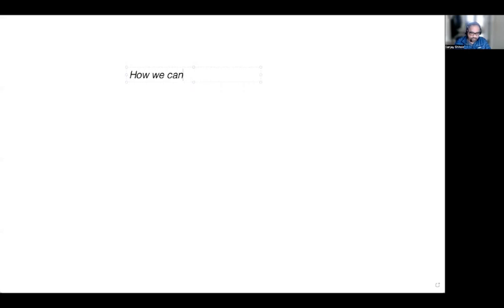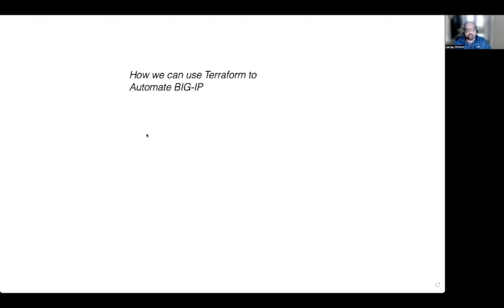Hello folks, today we'll see how we can use Terraform to automate the BIG-IP — F5 BIG-IP. For folks who are new to F5 BIG-IP, it is an Application Delivery Controller or ADC from F5 Networks. It provides a wide range of features like load balancing, security features, as well as traffic management for applications.